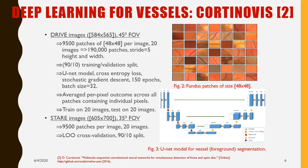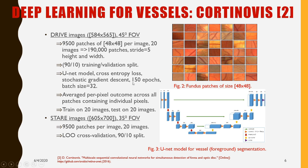Now let's look at a deep learning method for blood vessel segmentation. Deep learning typically requires a huge amount of training images because the number of parameters can be in the hundreds of thousands or millions. From each of the 20 images in the DRIVE, STARE, and CHASE datasets, we extract 48×48 overlapping patches with a certain stride. From 20 images we get around 190,000 patches. 90% are used for training and 10% for validation. The model used is the U-Net, trained with stochastic gradient descent over 150 epochs with a batch size of 32.